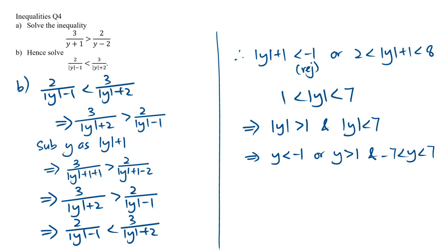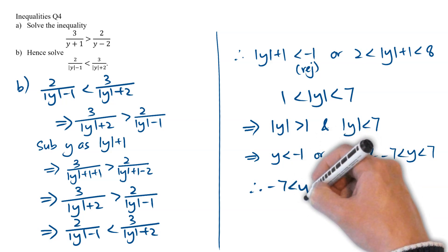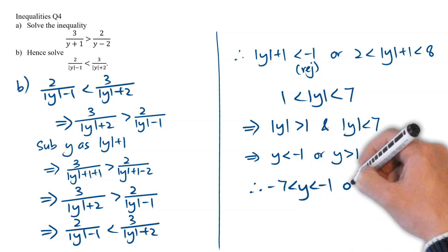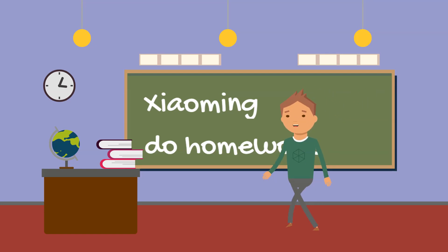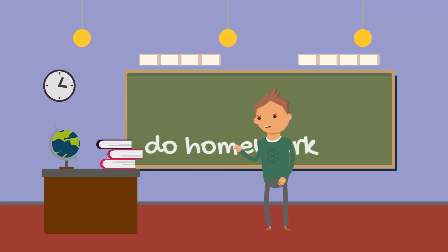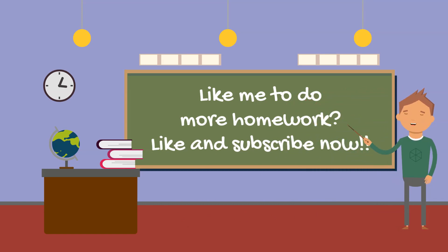Thereafter, if we combine these three solutions together, we will end up with the solution of negative 7 less than y less than negative 1, or 1 less than y less than 7.